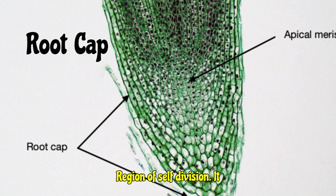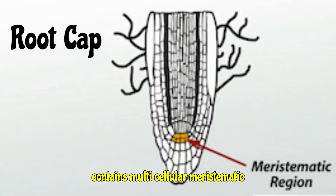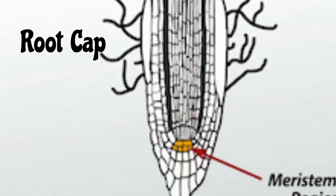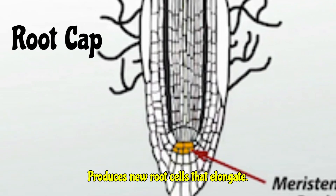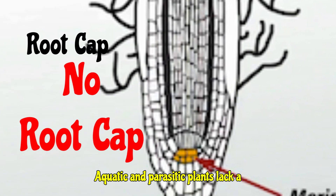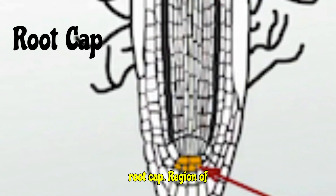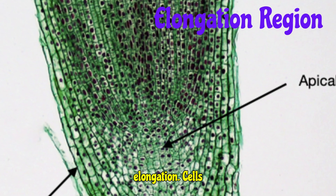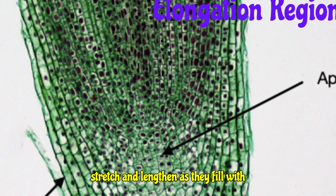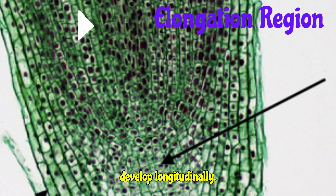Region of Cell Division: It contains multicellular meristematic cells that are constantly dividing. It produces new root cells that elongate. Aquatic and parasitic plants lack a root cap. Region of Elongation: Cells stretch and lengthen as they fill with water, allowing roots to develop longitudinally.